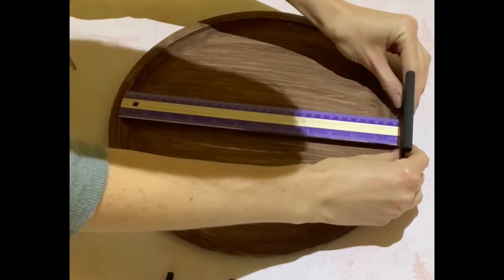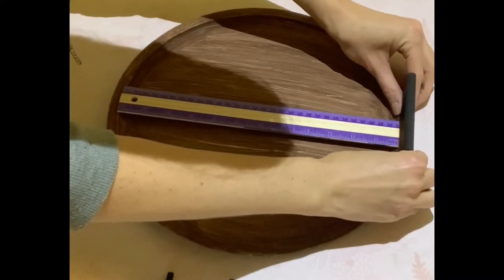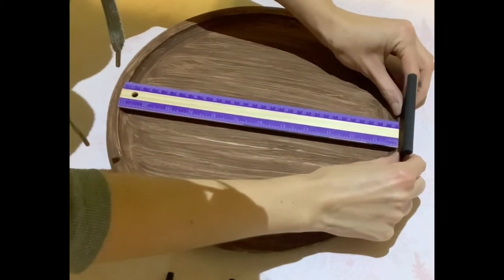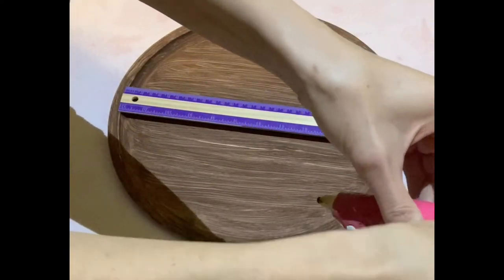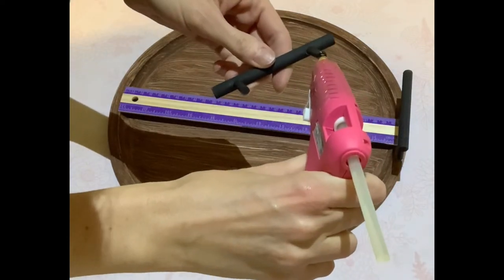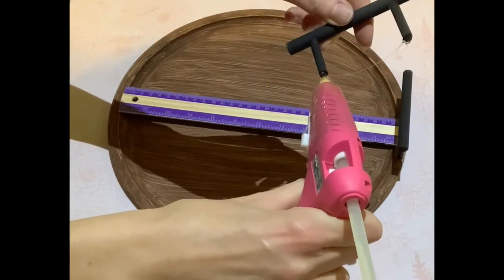Using my ruler, I'm making sure that I'm getting both handles evenly spaced out and right directly across from each other.